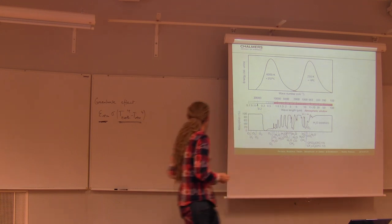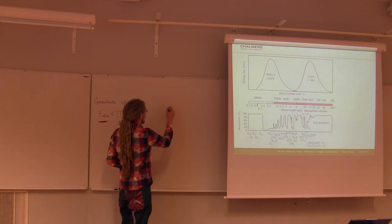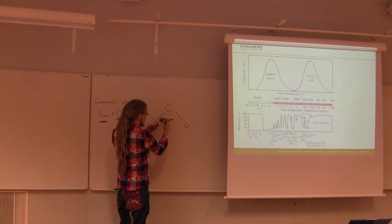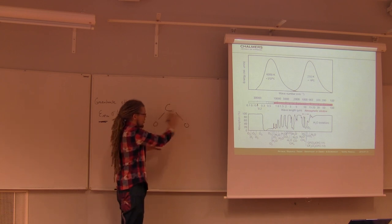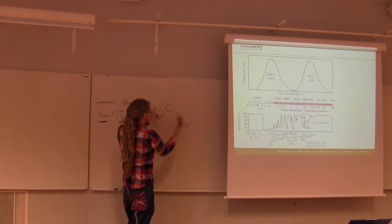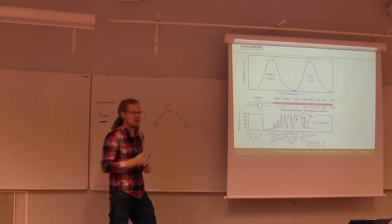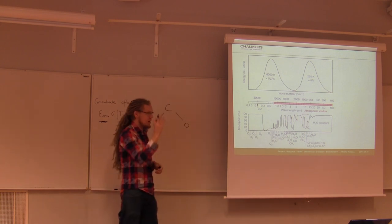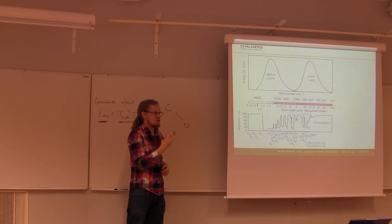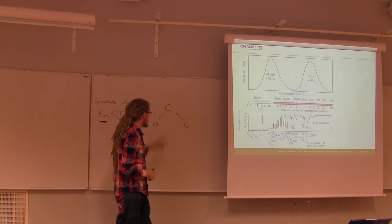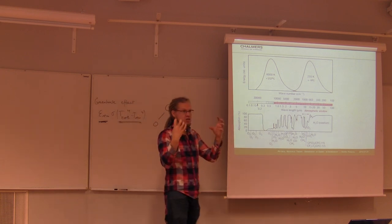Whereas if you look at carbon dioxide, you have a C with oxygens on either side. As this molecule starts to vibrate, you get a shift in the electric charge — the center of gravity of the charge distribution shifts. It's that shift that can be induced by electromagnetic radiation. So you need some sort of asymmetry in the charge of these molecules for absorption to happen.